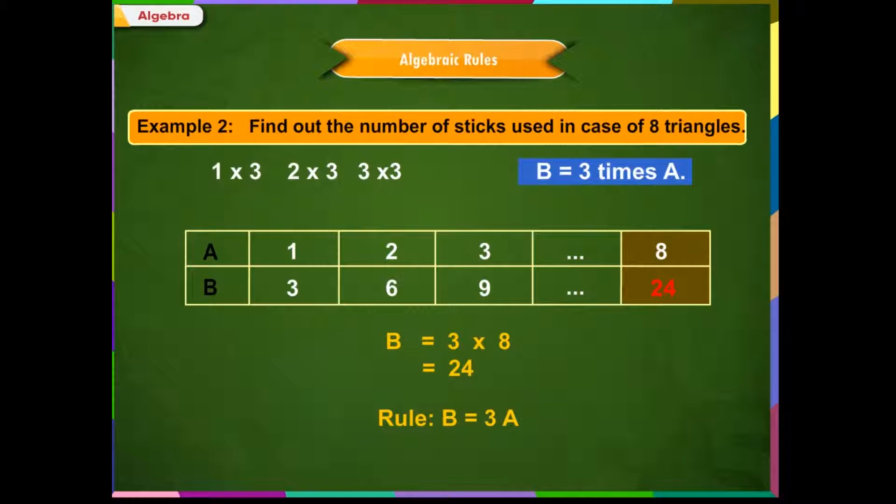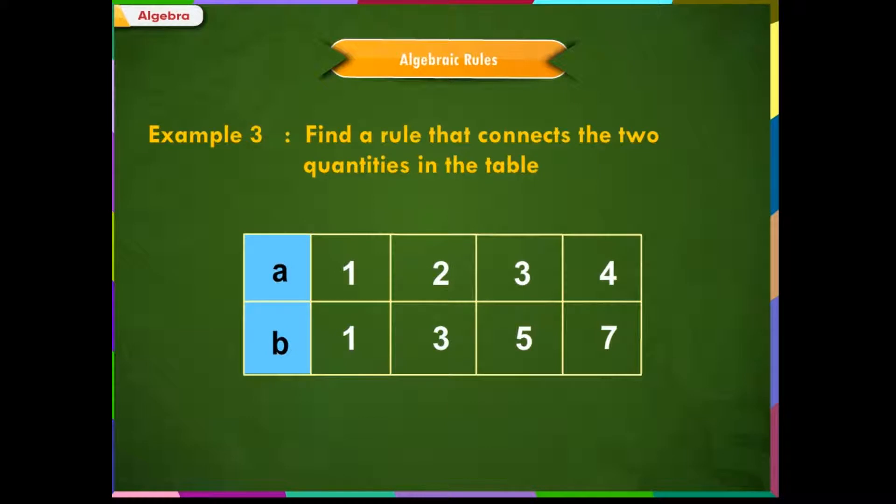Let us look at another example. Here, we are asked to find the rule that connects the two quantities A and B in the table. Look at the numbers in the row A: 1, 2, 3 and 4. And the corresponding numbers in the row B are 1, 3, 5 and 7. Observe that these numbers are changing by 1, whereas these numbers are changing by 2s. Every time we add 2 and we get the next number. Let us explore the various possibilities of finding the rule that connects the two quantities in the table.